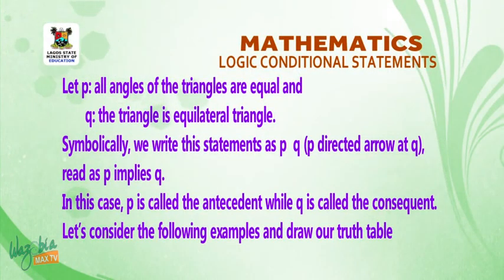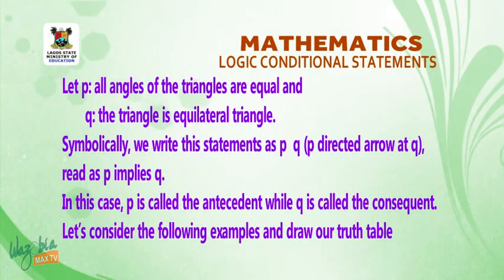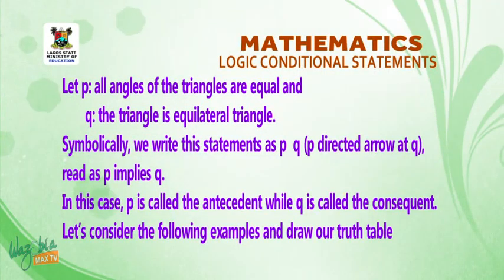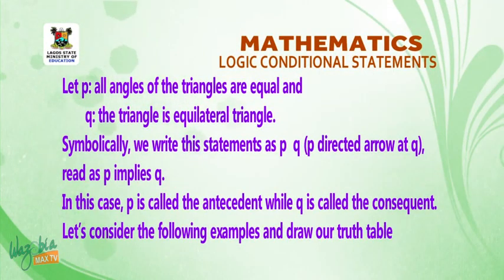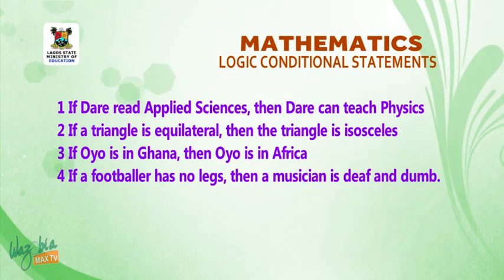Symbolically, we write this statement as p implies q, that is p with an arrow directed at q. In this case, p is called the antecedent, while q is called the consequent. Let's consider the following examples and draw our truth table. One: if Dari reads applied sciences, then Dari can teach physics.